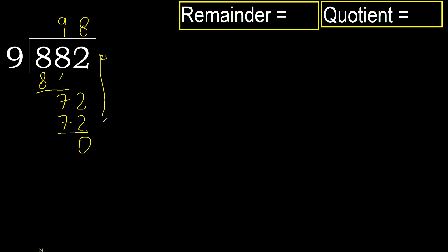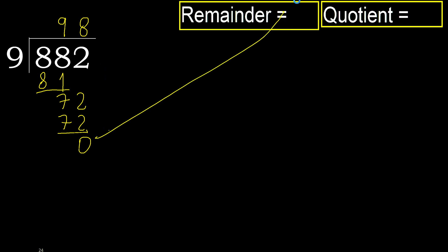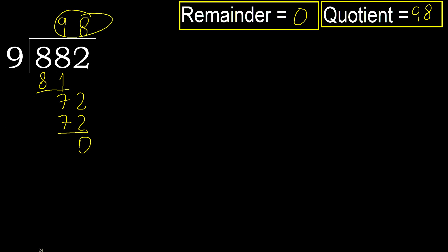There is no remainder, therefore we finish. Therefore 882 divided by 9 is 98.